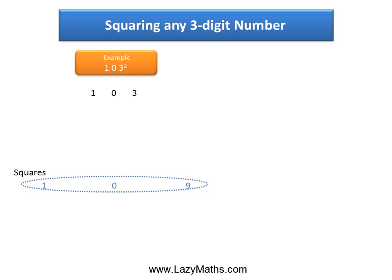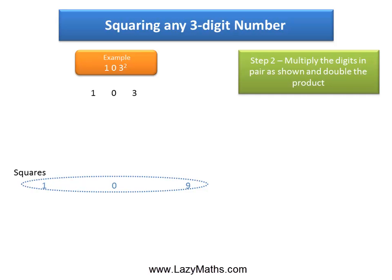The next step is multiplying each of these digits in pairs. So we get 1 times 0, which is 0, and then we double them. 0 doubled is 0 itself.